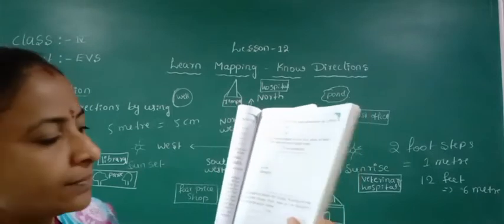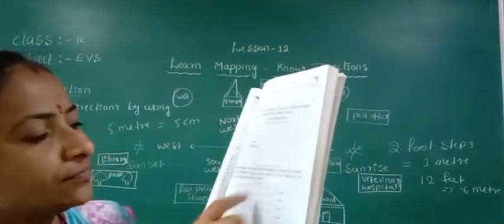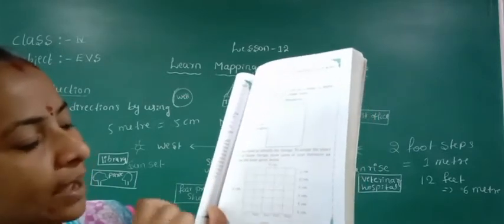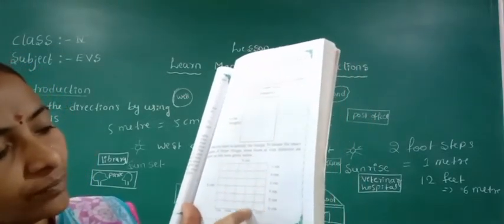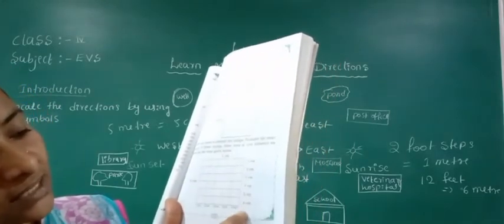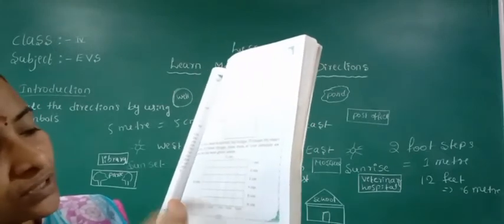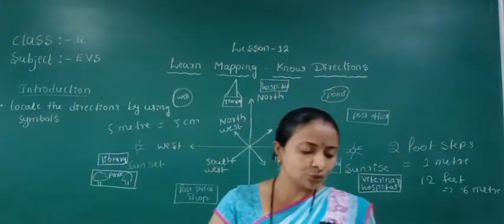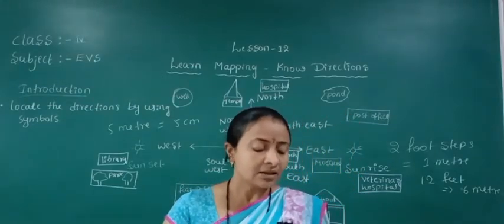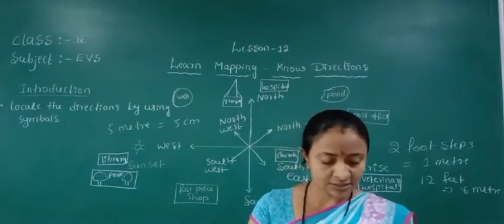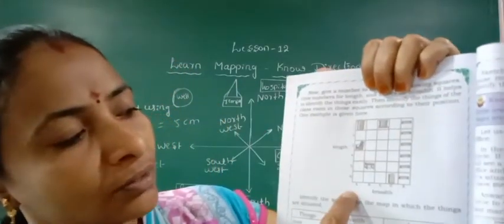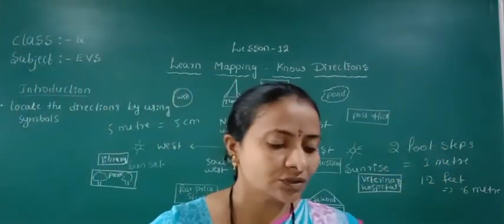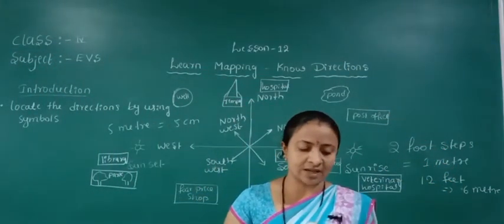Now you have to identify things and calculate their exact position. Draw lines of one centimeter distance as shown in the map — draw 6 lines with a one centimeter gap. Give numbers for length and letters A, B, C, D, E for breadth.